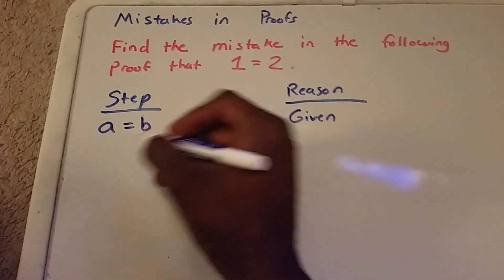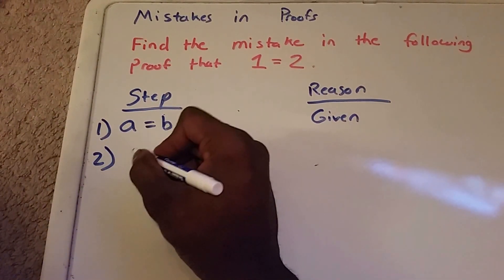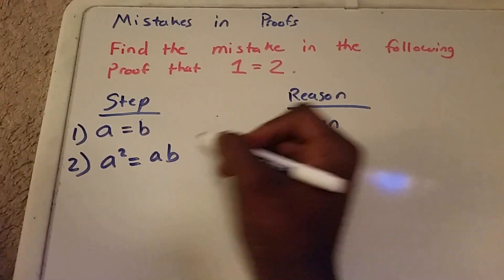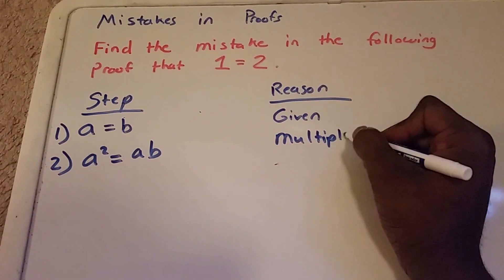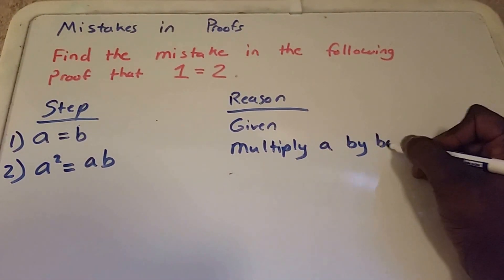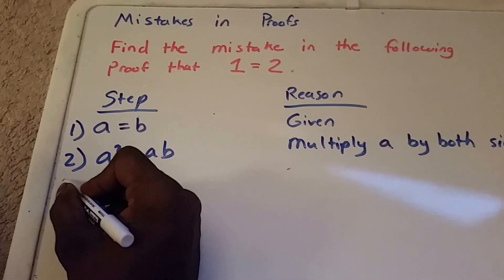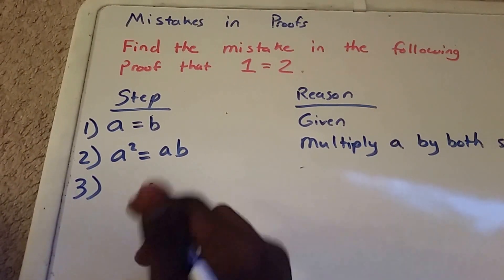Our second step, so that means that a squared equals a times b. That's because we multiply a by both sides. And here we're gonna go to step 3.